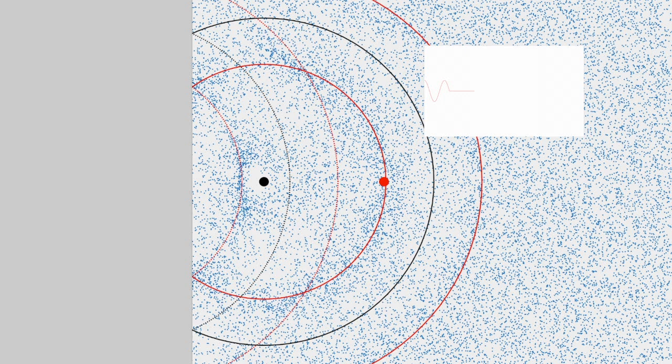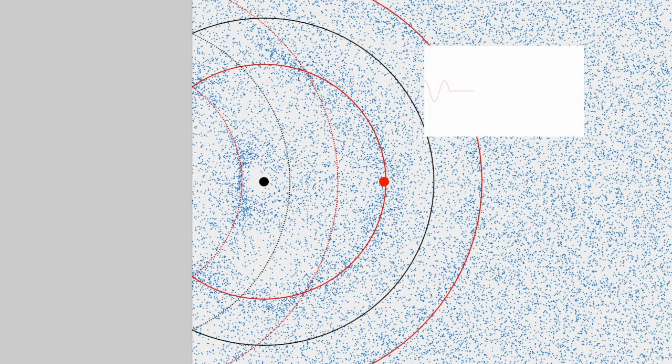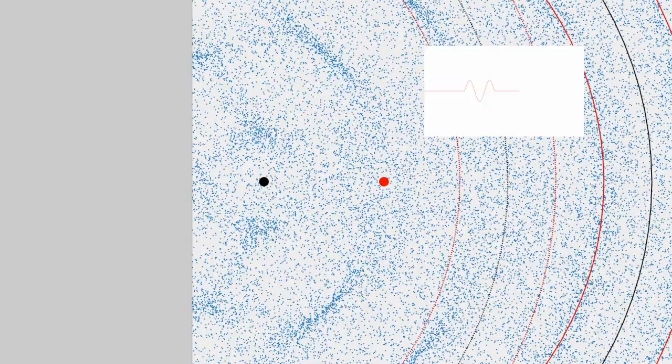Moving the source further to three-quarters of a wavelength from the wall, the high pressure wave reflects and returns after the source has emitted high pressure, low pressure, and high pressure again. The first reflected high pressure meets the second low pressure emission, and they start canceling each other. In the long run, this produces the same cancellation as being one quarter wavelength away. However, as seen in the graph, you get more of the beginning of the wave before cancellation kicks in, because it takes longer for the reflection to arrive.